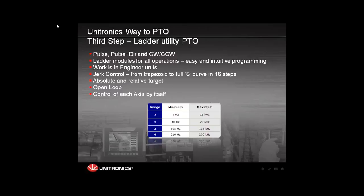It is very easy and user-friendly to program, and way more advanced than all previous Unitronics PTO capabilities. The first feature is that you can use either pulse only, pulse and direction, or clockwise and counterclockwise. The PTO uses two outputs — one for pulse and one for direction, or one for clockwise pulses and the second for counterclockwise pulses. The ladder models for all operations are very easy and intuitive to program.